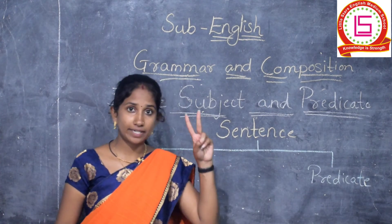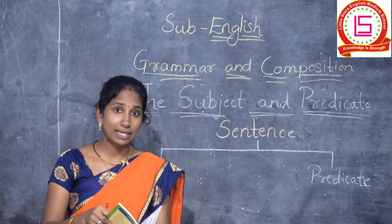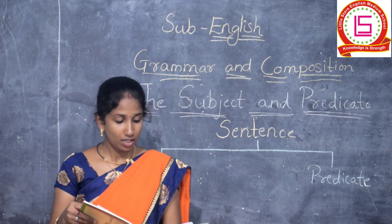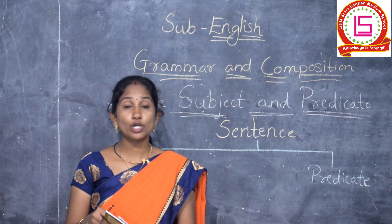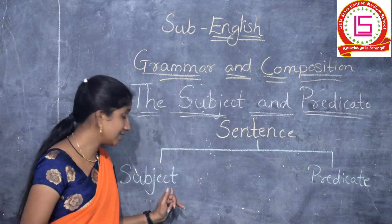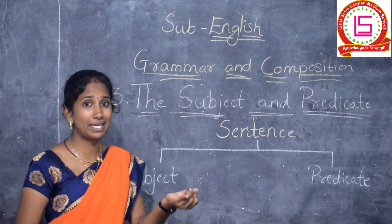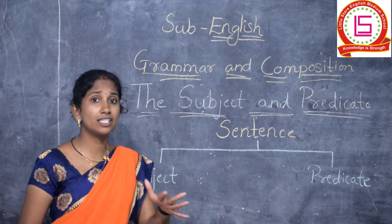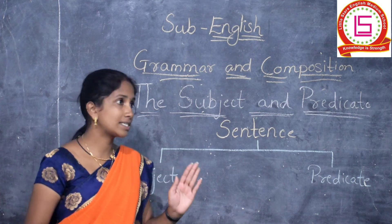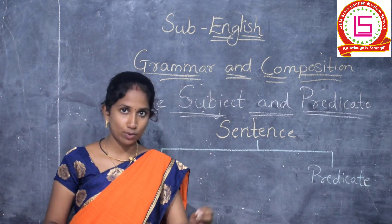Sentence is divided into two parts, subject and predicate. So, what do you mean by subject? A subject is what or whom the sentence is about. Subject means anything — the name of a person, place, or anything — what or whom the sentence is about. Suppose the sentence is about a cat, then the subject is cat.